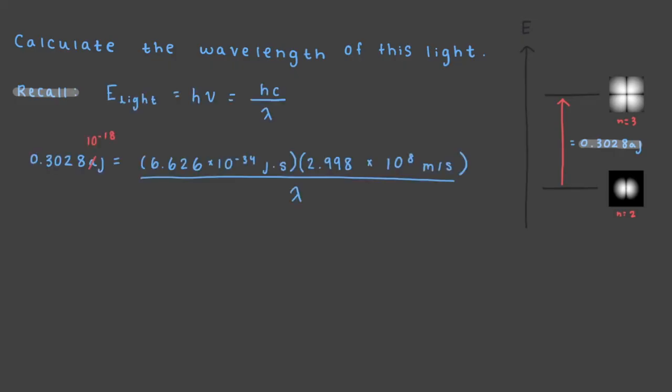By plugging in the energy, Planck's constant, and the speed of light, our wavelength comes out to 656 nanometers.